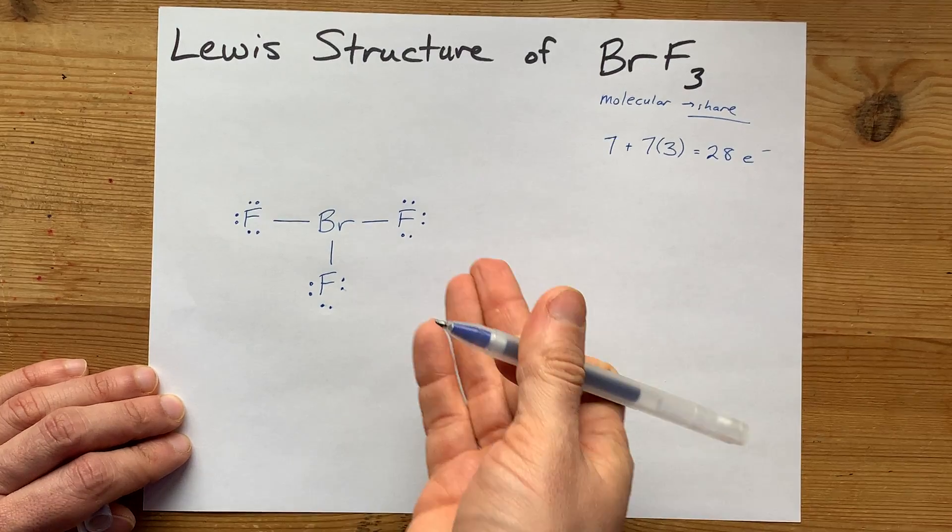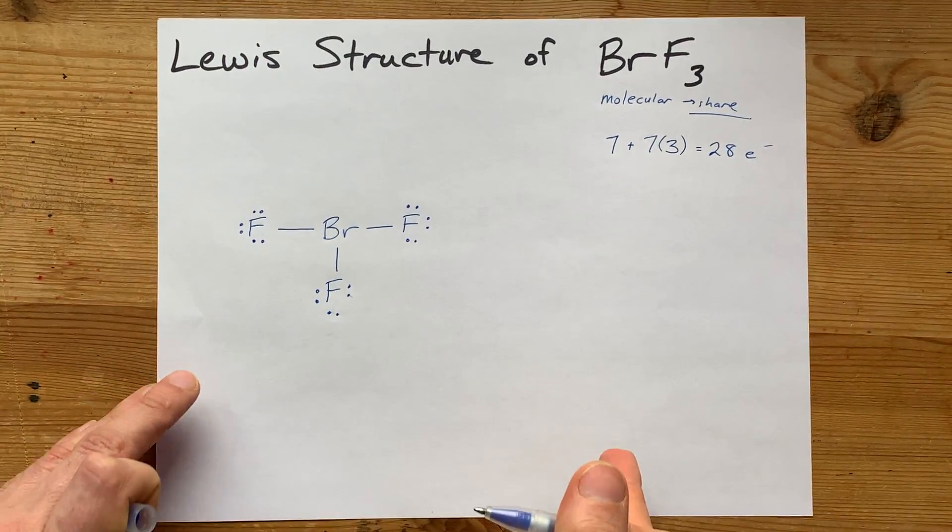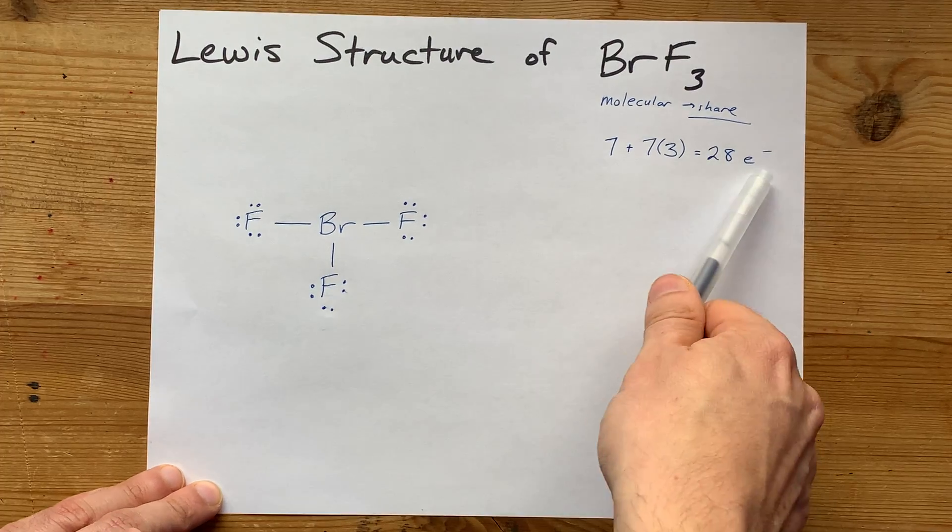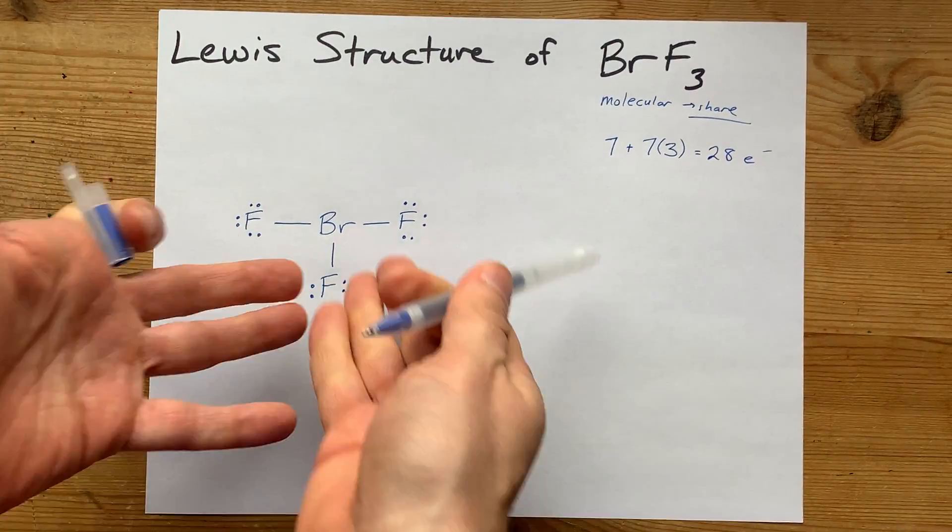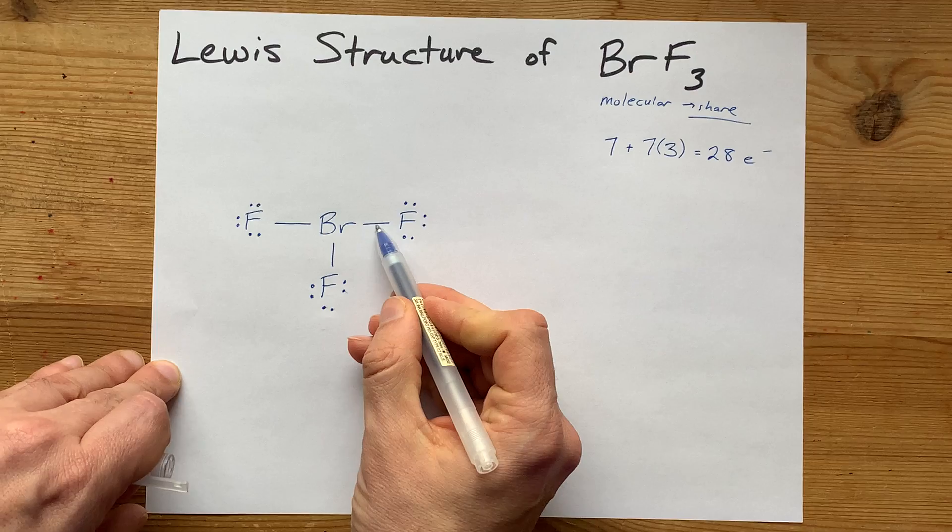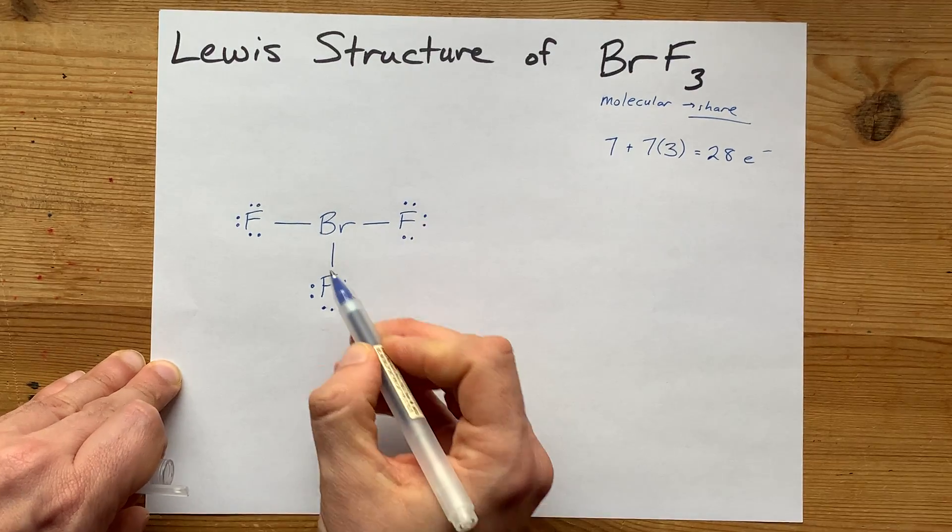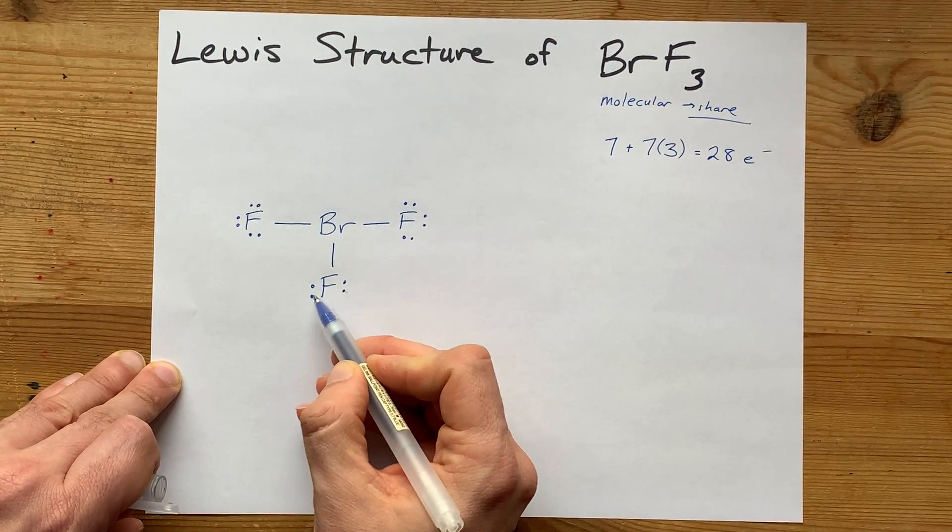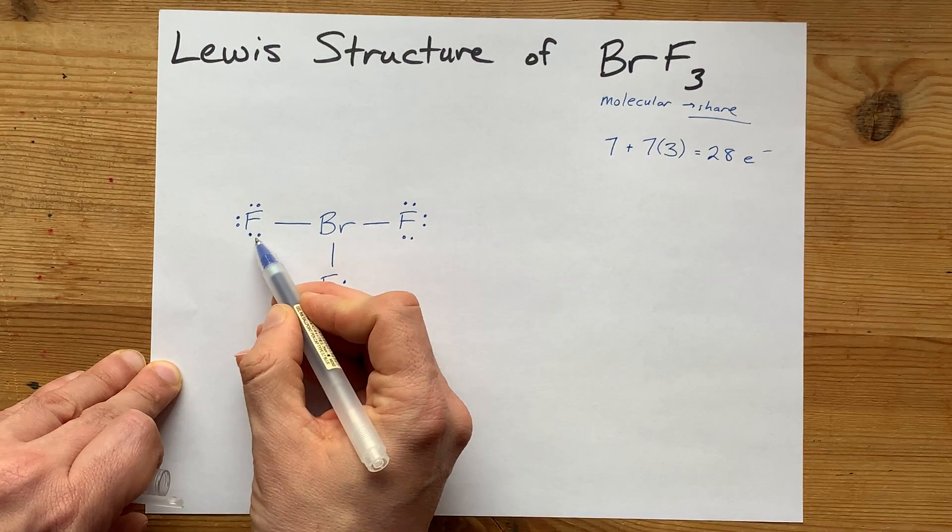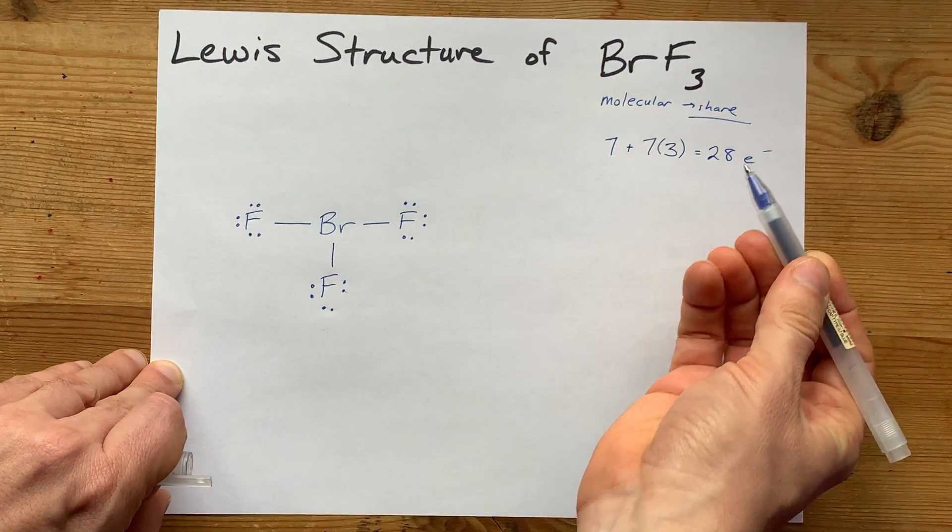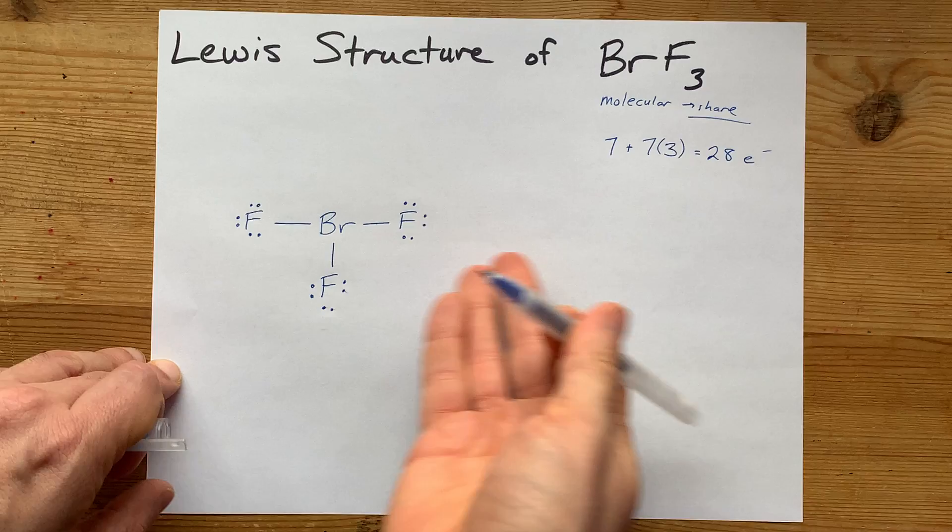Now, so far, the fluorines have a satisfied octet rule, but we need 28 electrons total, and I wasn't even counting how many electrons we put here. Counting them up: 2, 4, 6, 8, 10, 12, 14, 16, 18, 20, 22, 24. We have 4 extra electrons we've got to deal with.